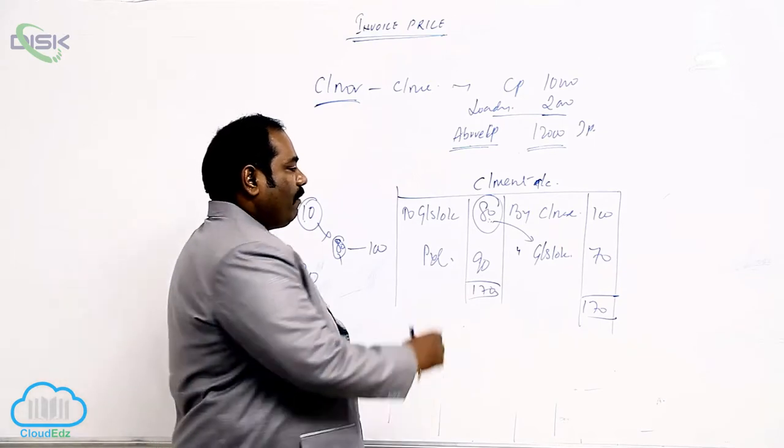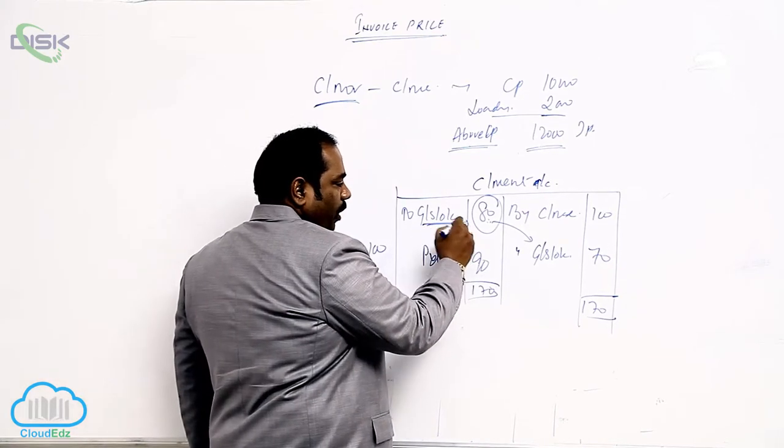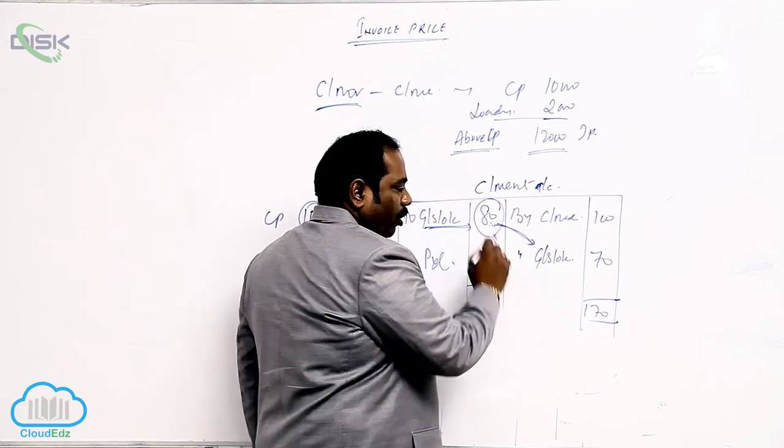If you want to know the CAC profit, whenever the goods are sent at invoice price, that has to be unloaded by writing it on the credit side.